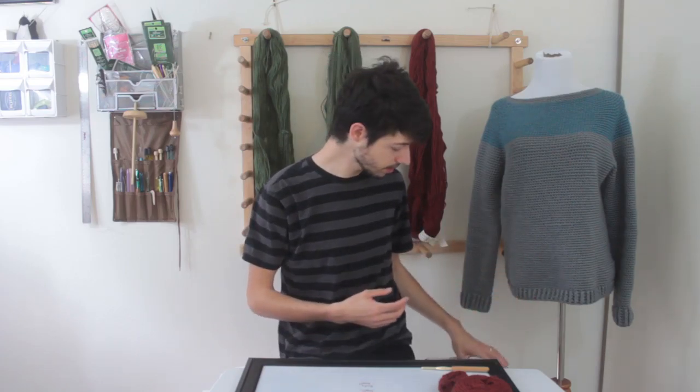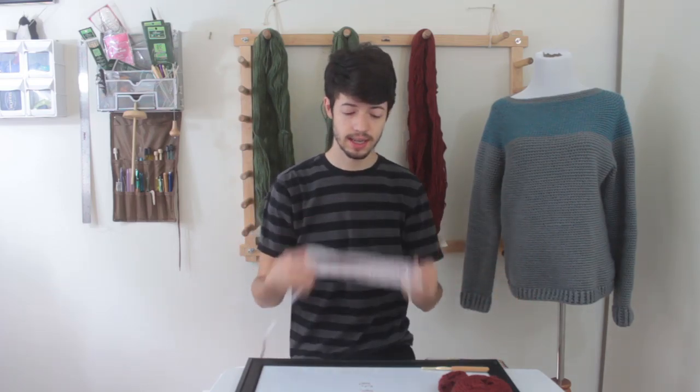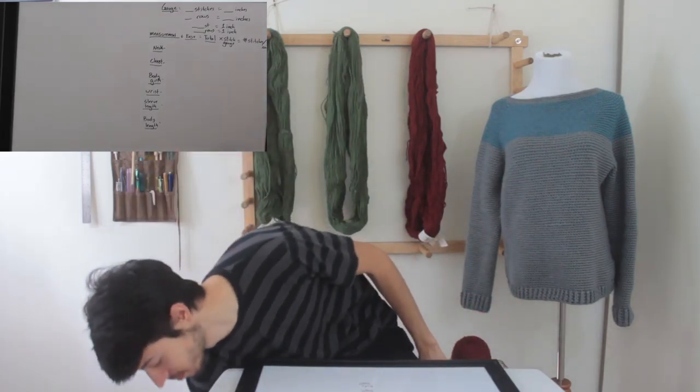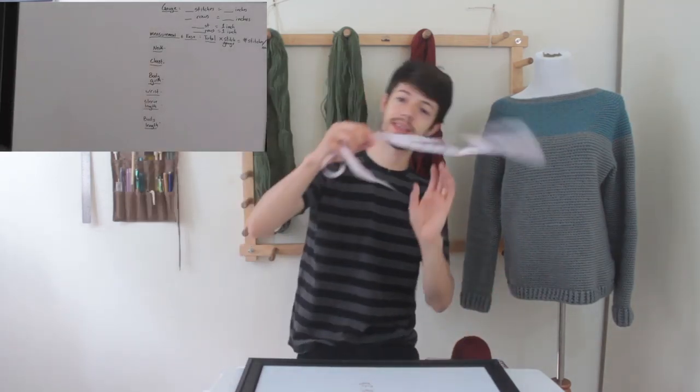So there are six basic measurements that you need to take into account when you are making your sweater. And I am going to go through all of them and how to measure for each one. There is also something called ease that we will take into account once we have done our measurements. So what you are going to need for this is a fabric tape measure. And that is it.